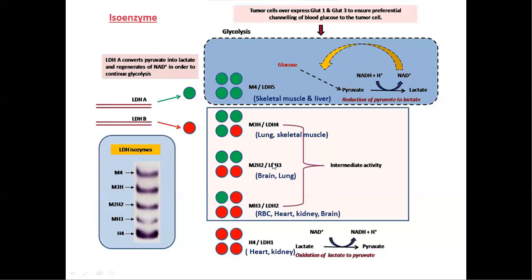LDH4, LDH3, and LDH2 act with intermediate activities in the cell. LDH1 is useful for converting lactate to pyruvate, producing similar catalytic activity under different conditions of the cell. This is about isoenzymes. This is the end of the topic. Thank you.